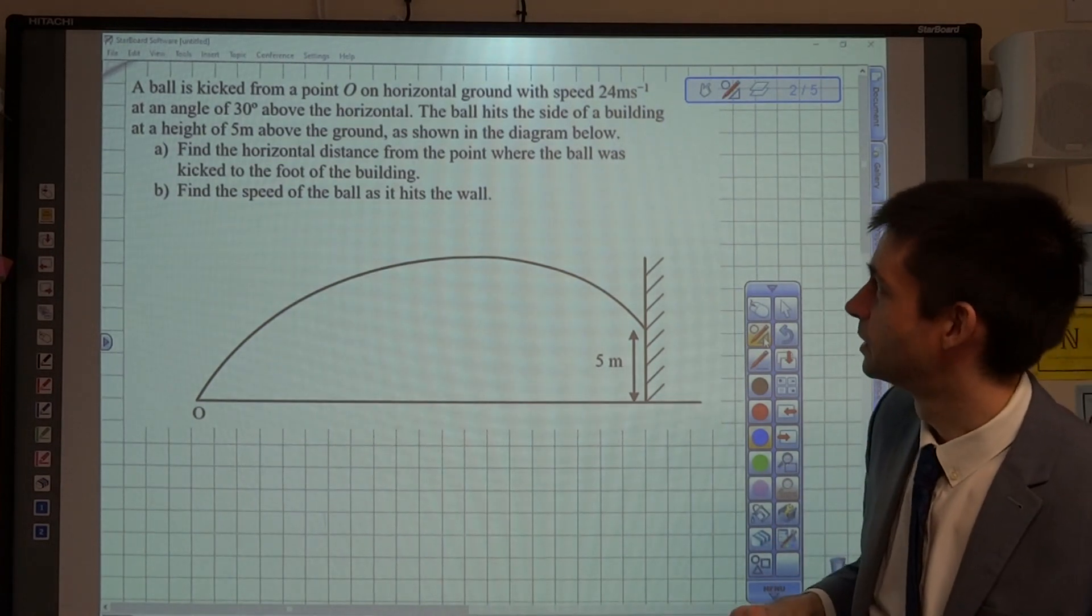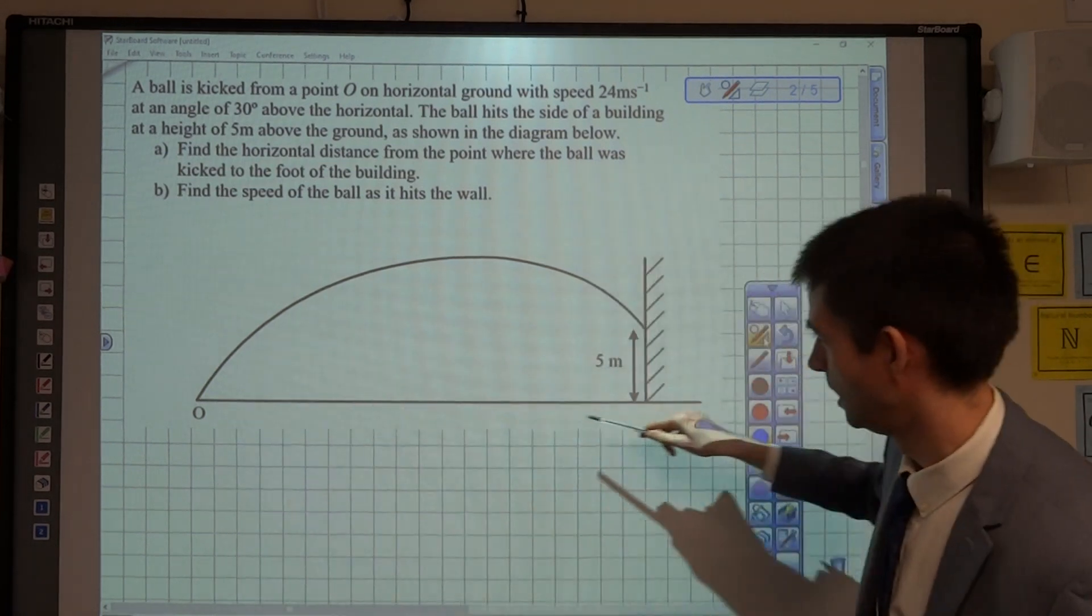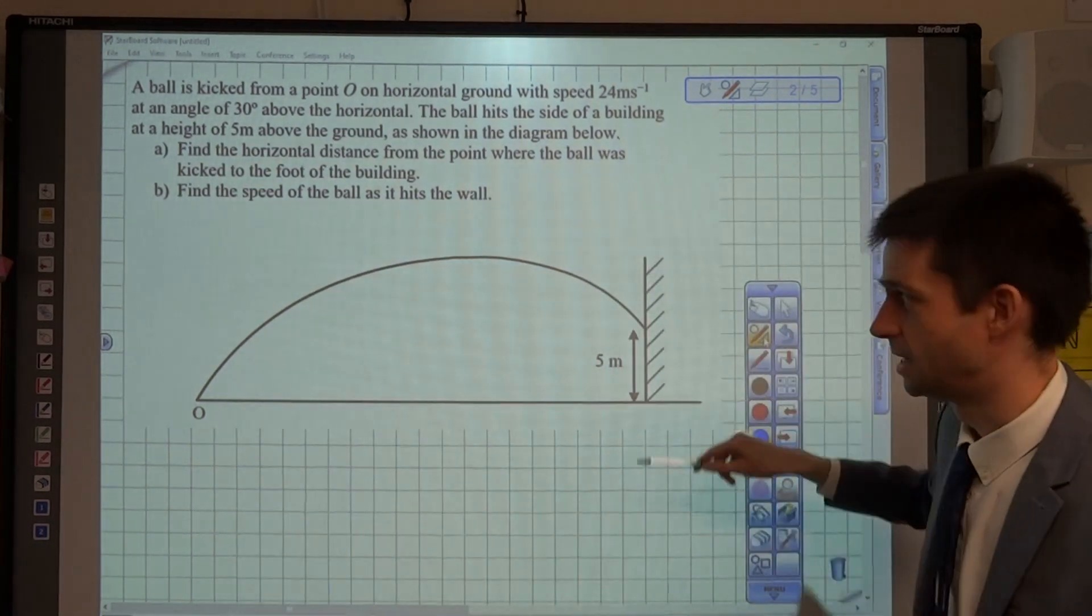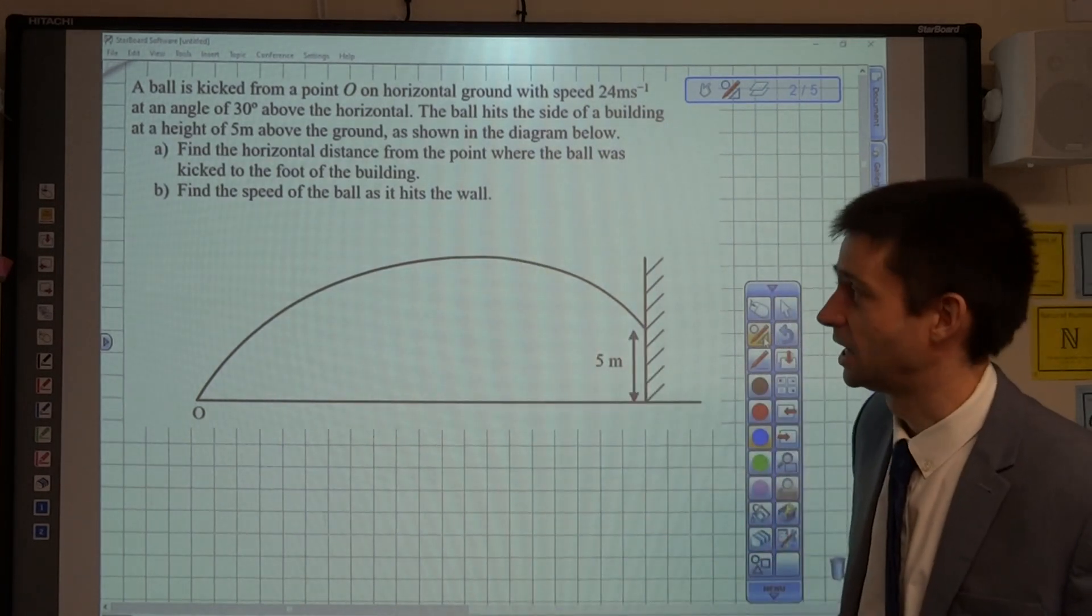Find the horizontal distance from the point where the ball was kicked to the foot of the building. We're being asked to find this distance along the x-axis, along the base. And we're also going to find the speed of the ball as it hits the wall.